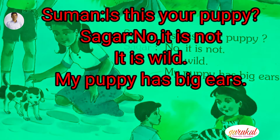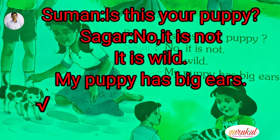Suman: Is this your puppy? Kya yah puppy tumhari hai? Sagar: No, it is not. Nahi, yah meri nahi hai. It is wild. Yah jangli hai. My puppy has big ears. Mere puppy ka kaan bara hai.